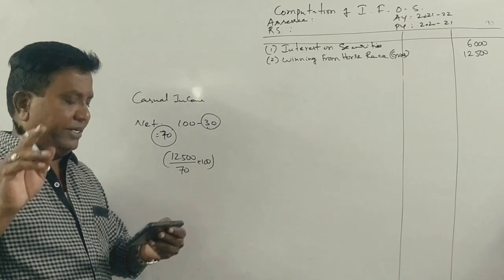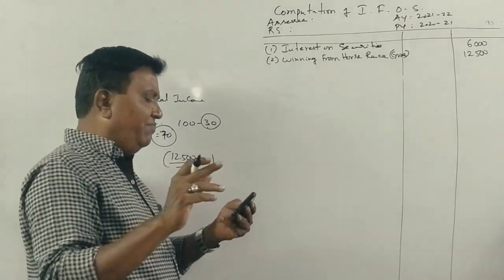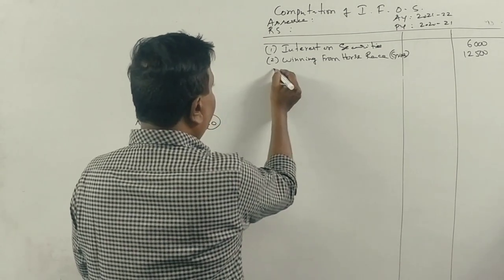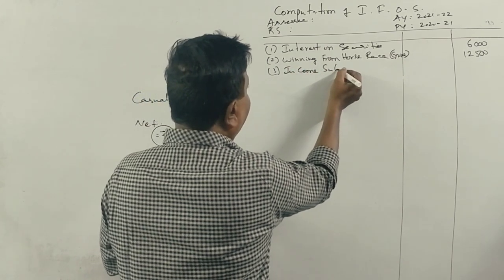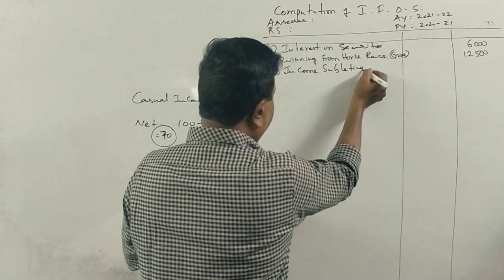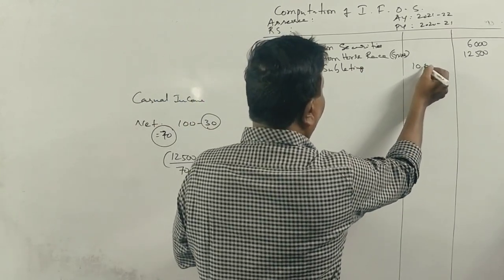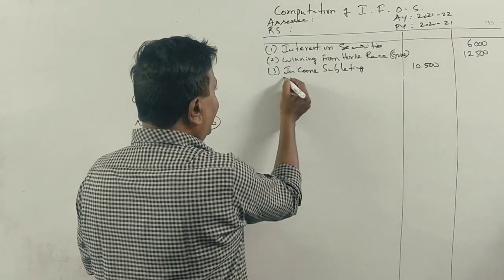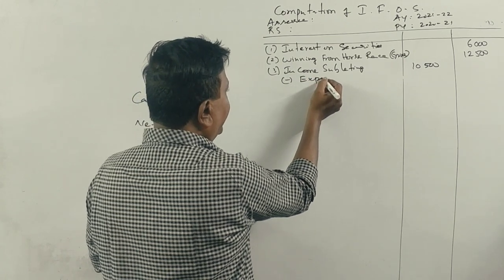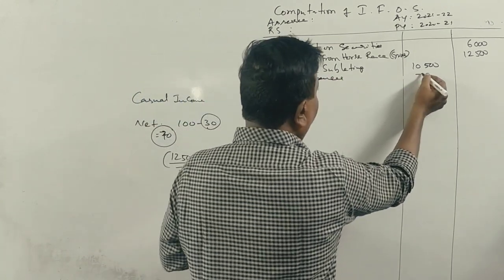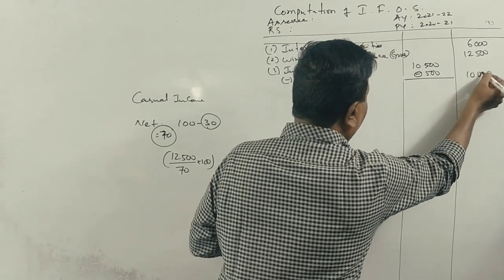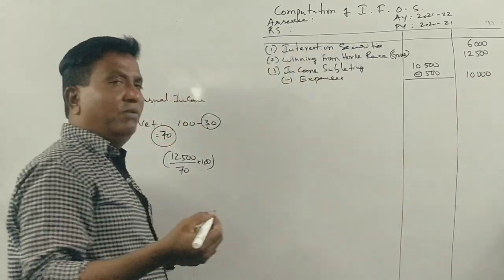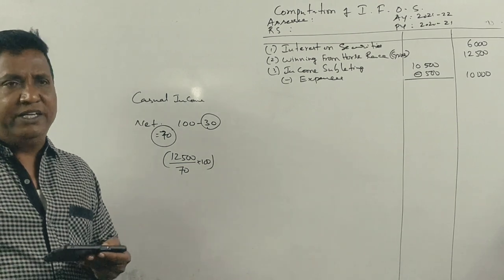Next point, income from subletting. This is the income from subletting, the house of Rs. 10,500. If it is connected, what expenses are given in the next point? 500 rupees, subletting expenses are given. If the net income of subletting house is Rs. 10,000.